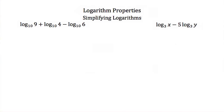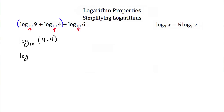These three logarithm properties are typically used to simplify logarithms. Here we have the log base ten of nine plus the log base ten of four minus the log base ten of six, and we want to simplify this expression. First, check that we have the same base — which we do. Taking the first two logs, log of nine and log of four are added together, so we can use the product property and write this as the log base ten of nine times four. Nine times four is thirty-six, so this is the log base ten of thirty-six.